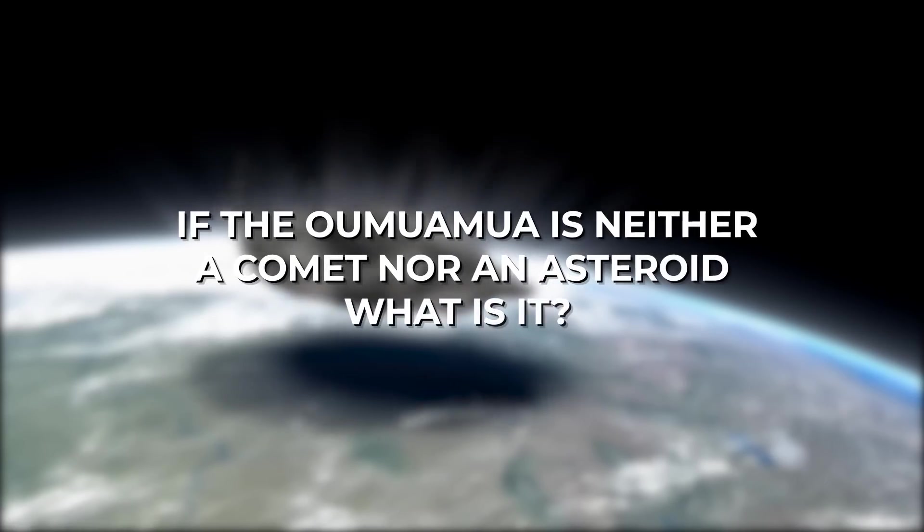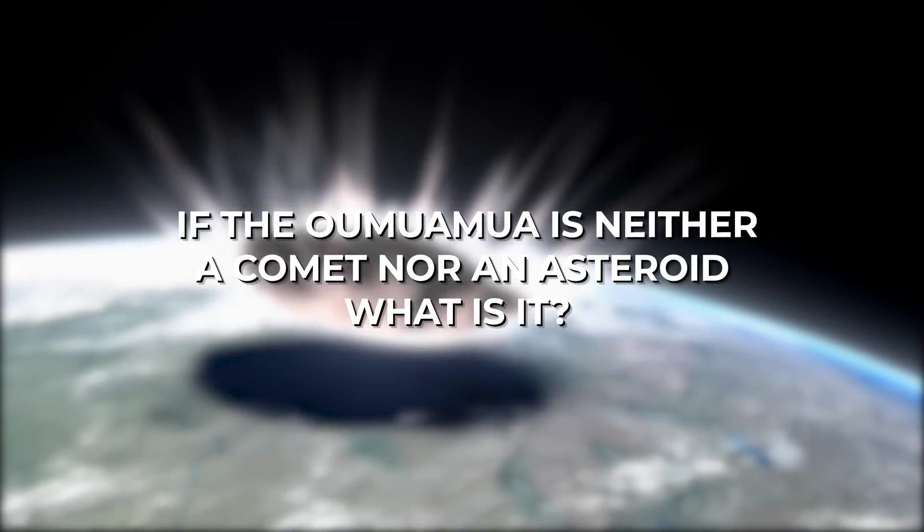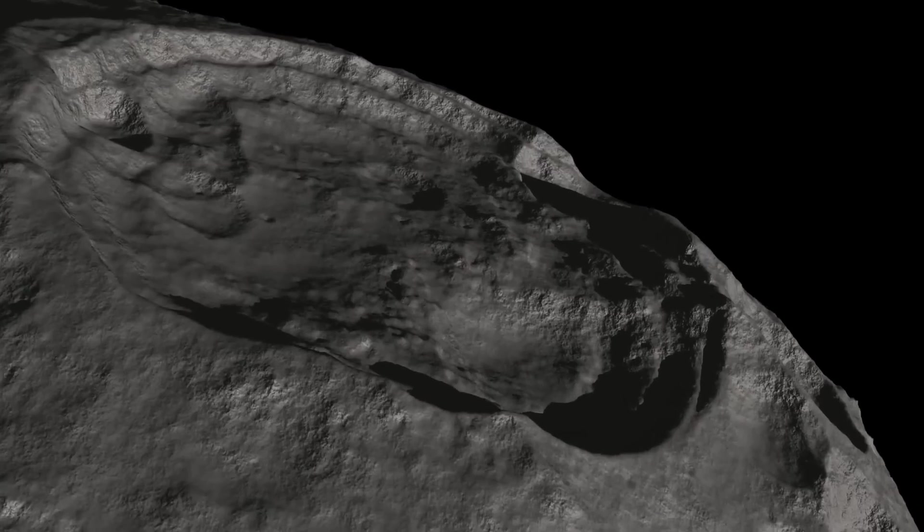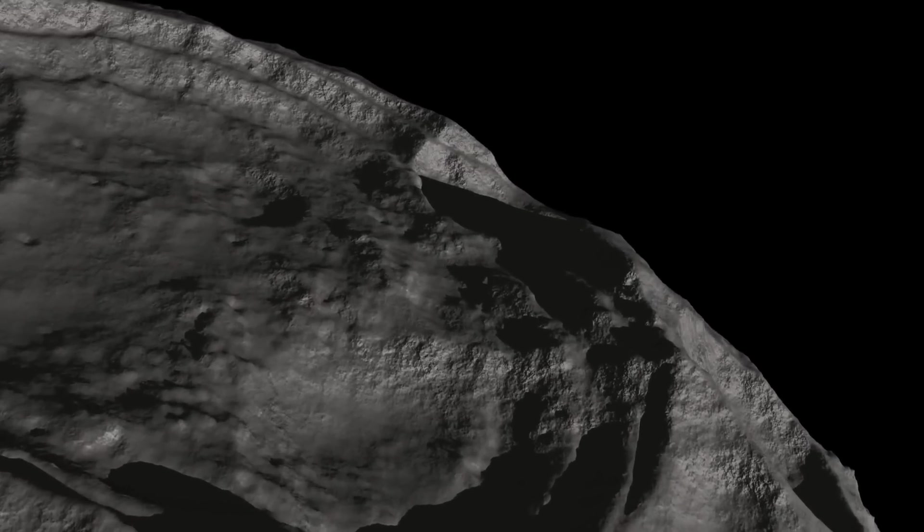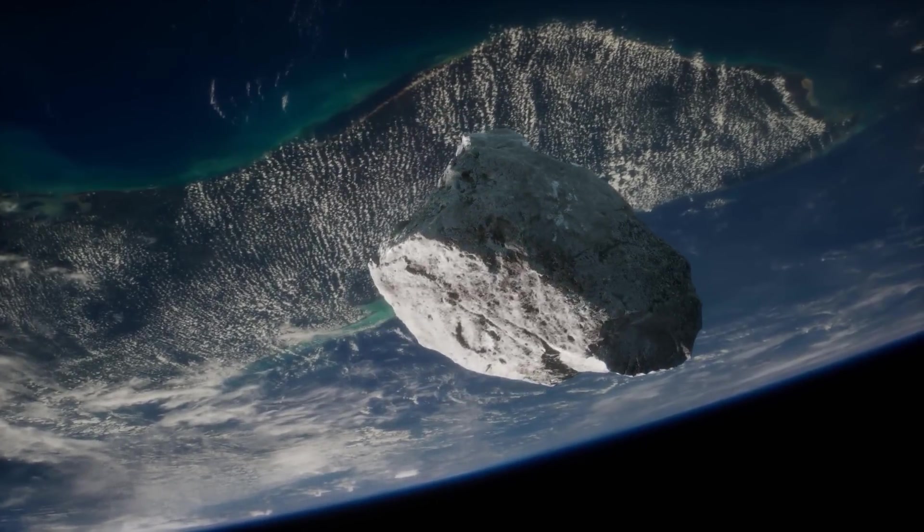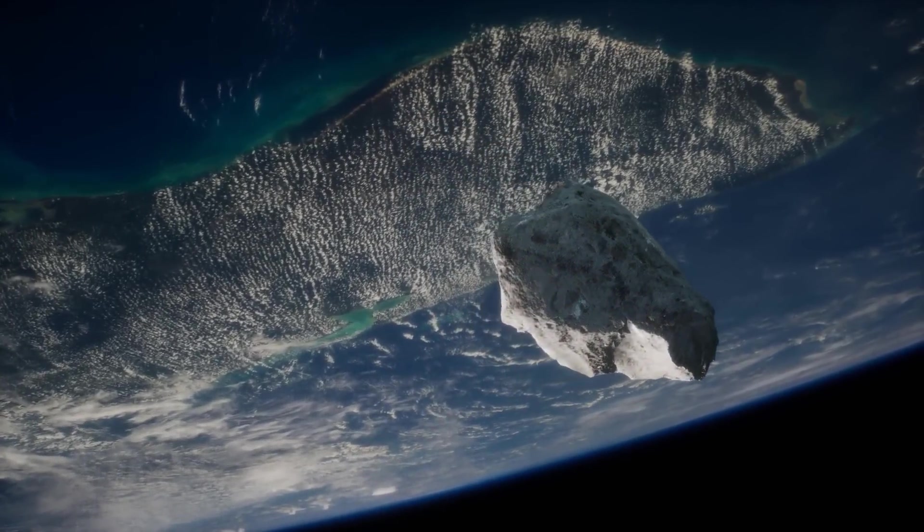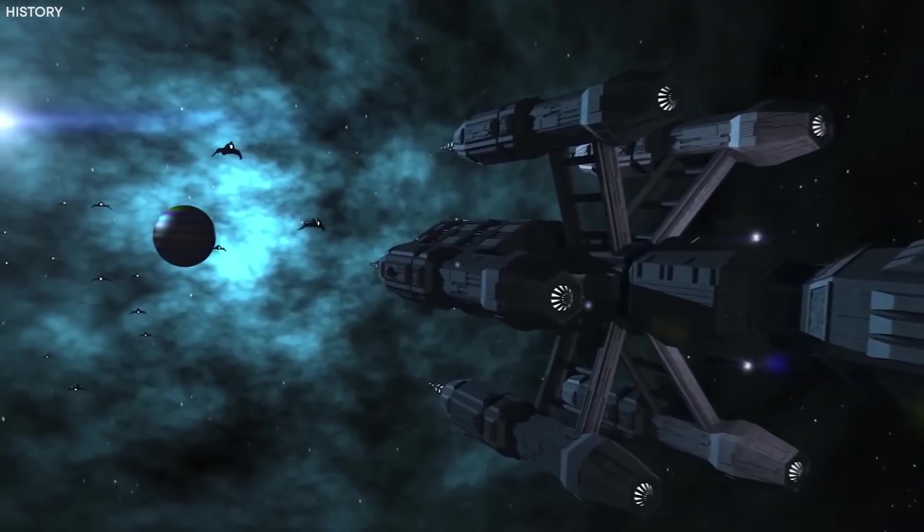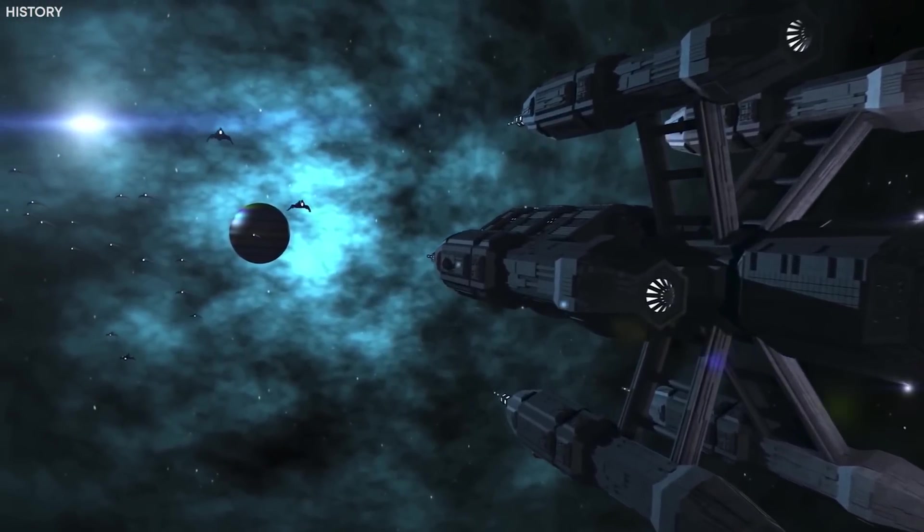But if Oumuamua is neither a comet nor an asteroid, what is it? In the end, the confusion about the Oumuamua not being an asteroid or a comet has made some scientists speculate about the possibility of it being an artificial object, such as a probe sent by an extraterrestrial civilization.